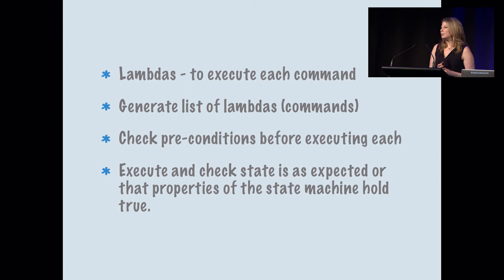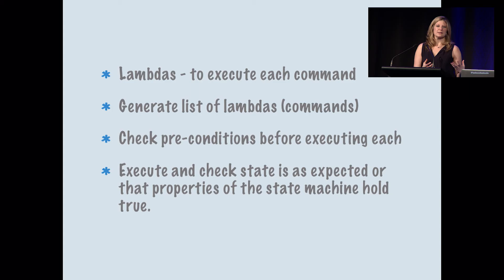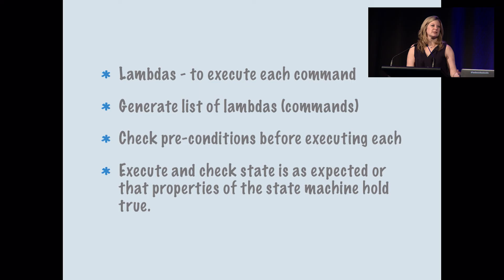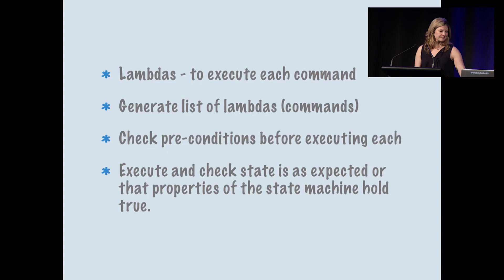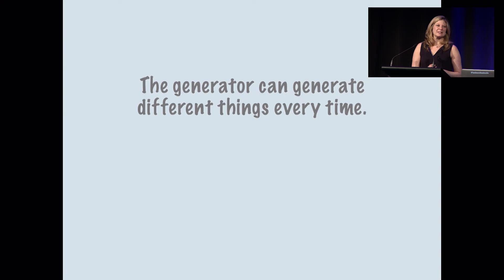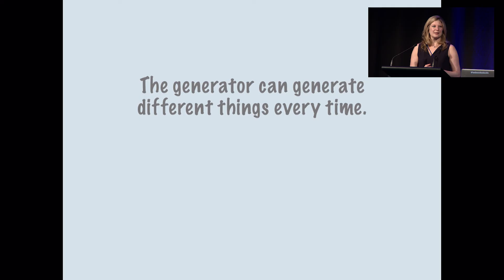What about generating commands? In property-based testing, generating commands that you execute against a system to validate results is really common. You use lambdas to create your commands and execute a list of those lambdas against your system. Before you execute them, this is where you actually do use preconditions — if your command is a get, you need to make sure somebody has previously put that data there. Then you execute them to check the resulting state. Something to be aware of: generators generate different data every single time you run them. So if you find an error based on generated data, write a unit test for regression — otherwise you may not generate that same bug next time, and somebody could reintroduce it.